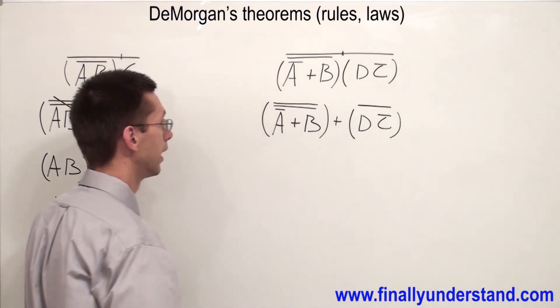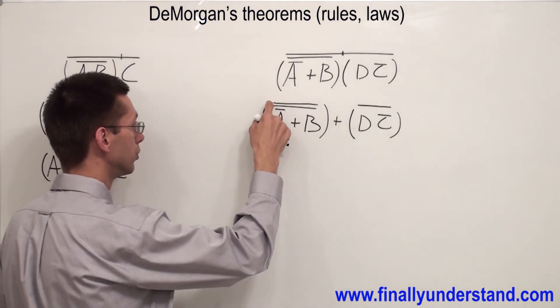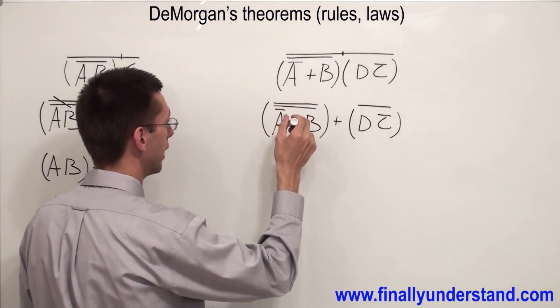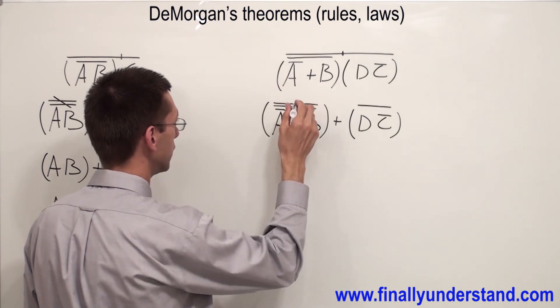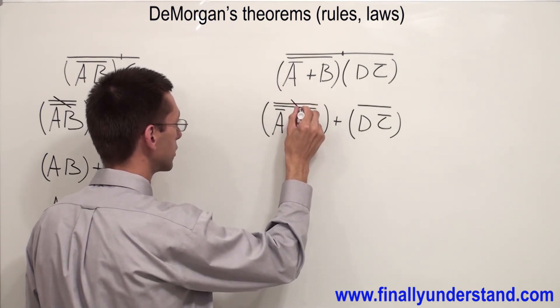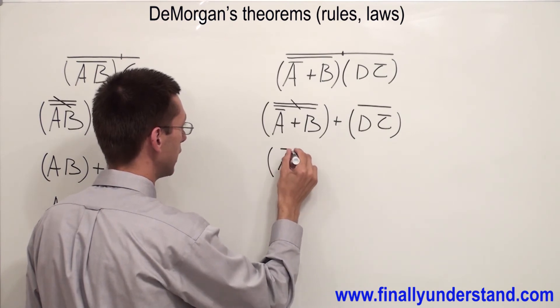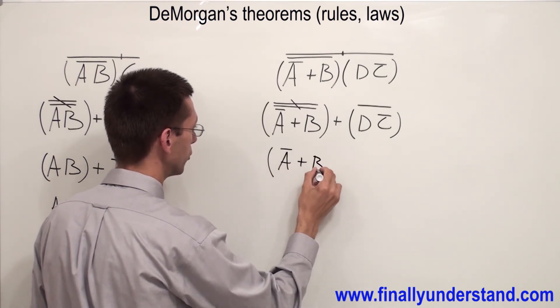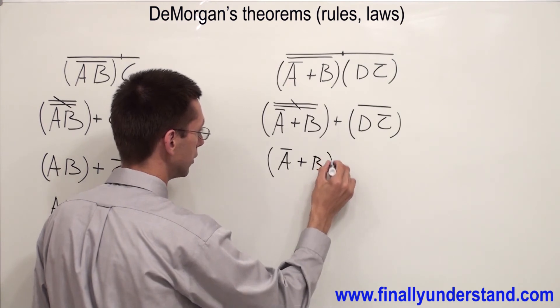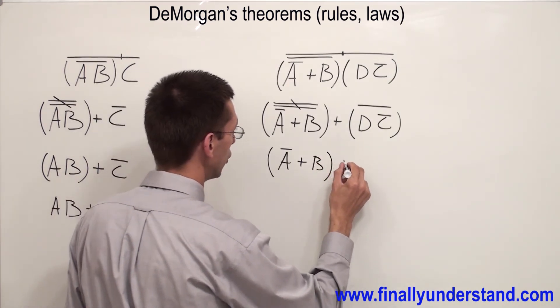Now because these two bars are equal, that's why I'm going to cancel them out and I'm going to end up with A̅ OR B.